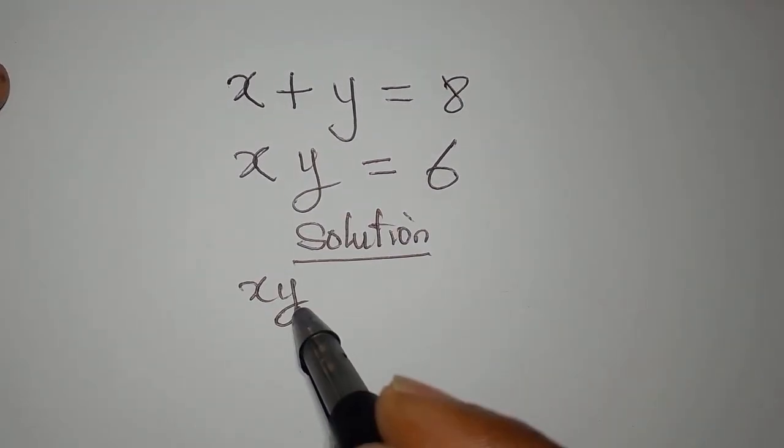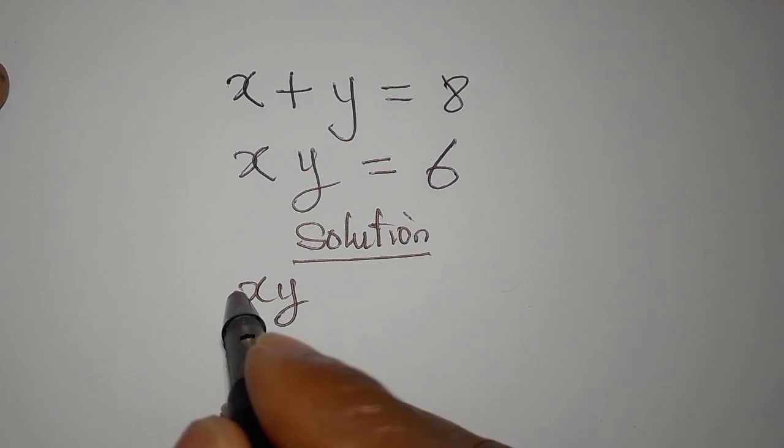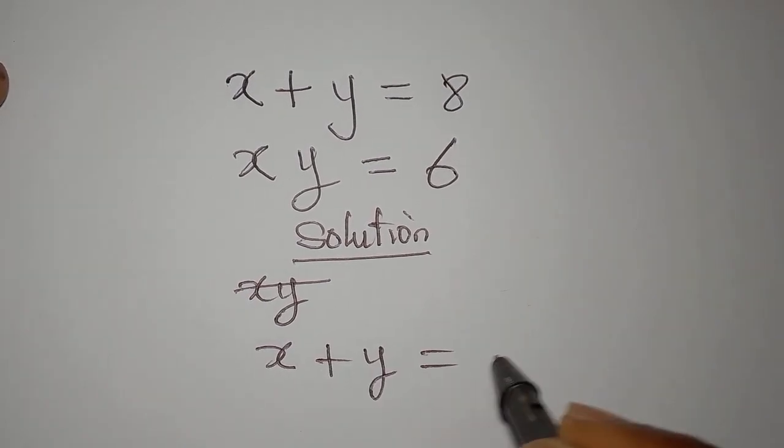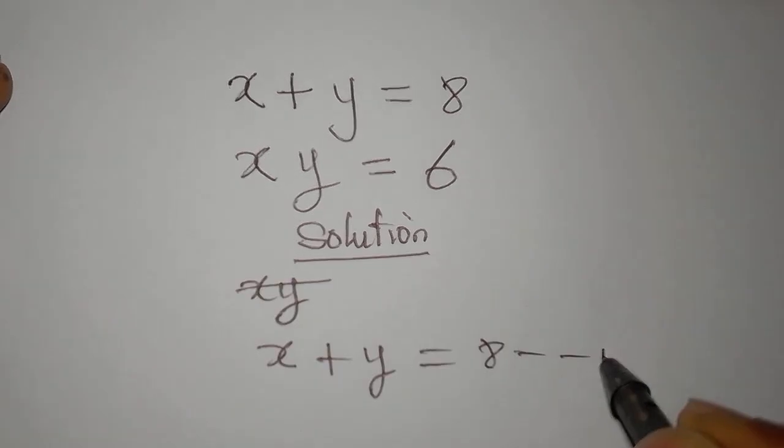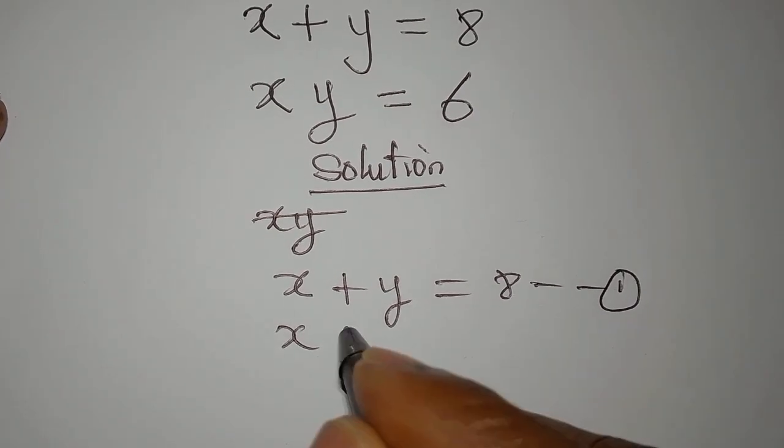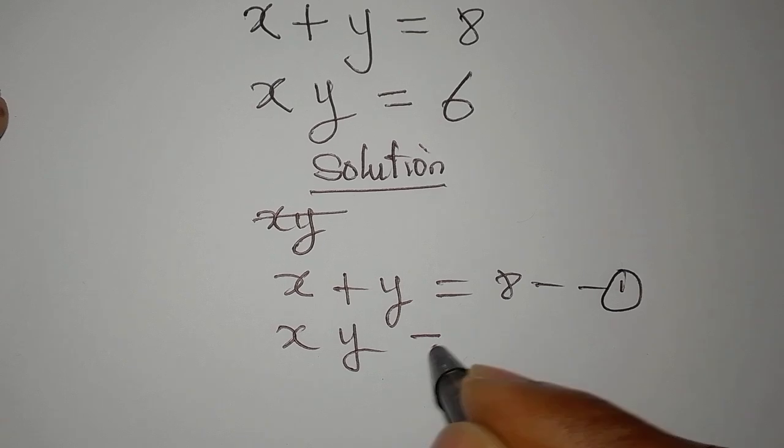Okay, by the way, this is my equation too, right? Let me write it better. This is x plus y equals 8, equation 1. Okay, then we have xy equals 6, equation 2.